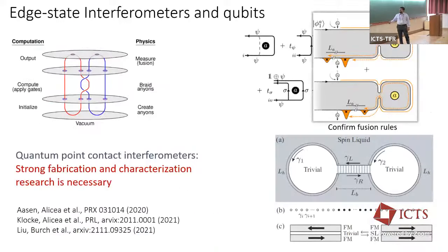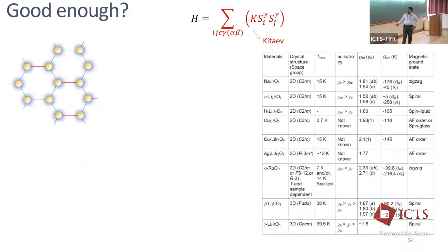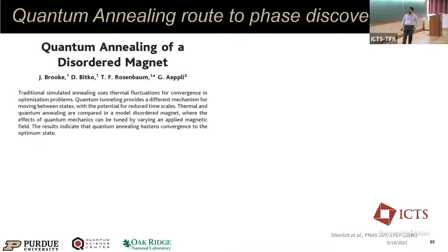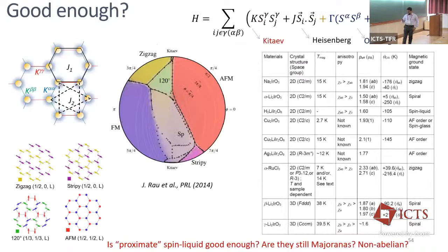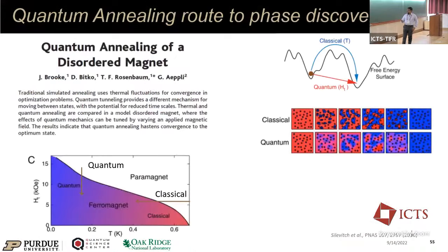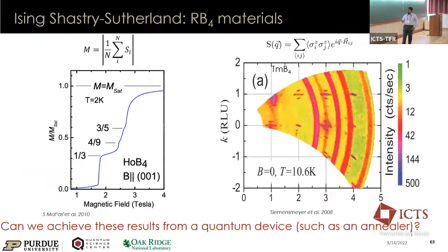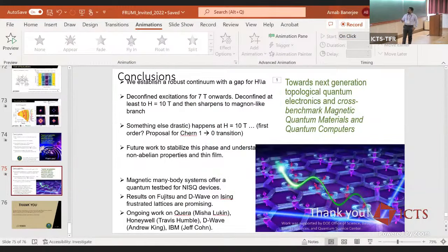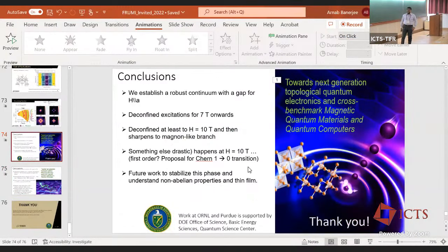We still have to answer the question of whether a proximate spin liquid is good enough — and with that I'll go to my final slide.